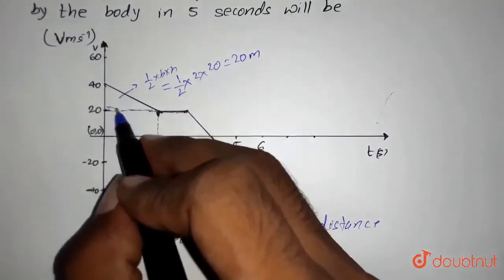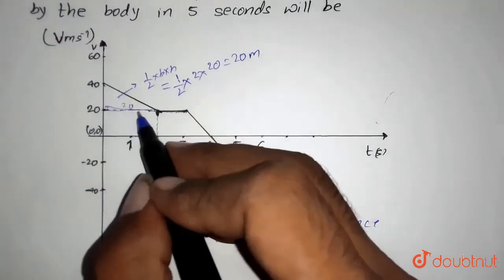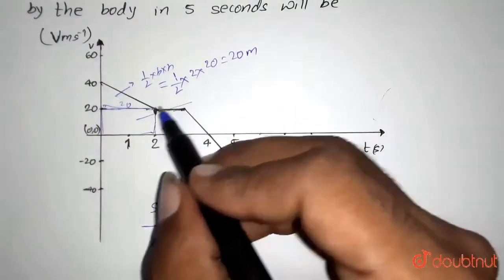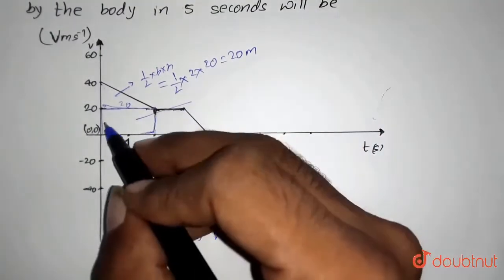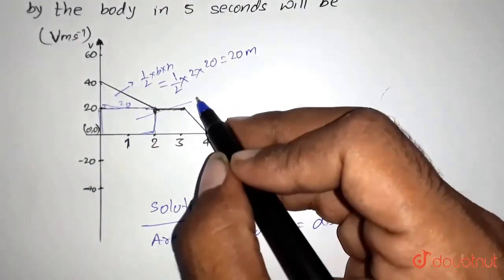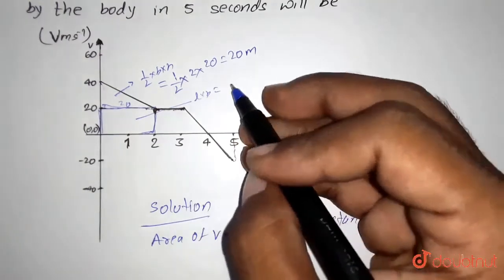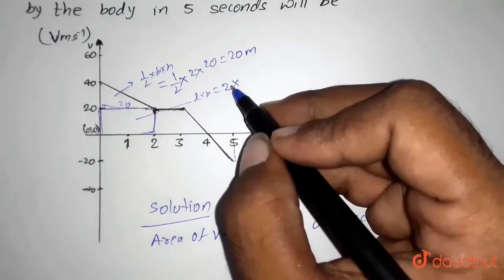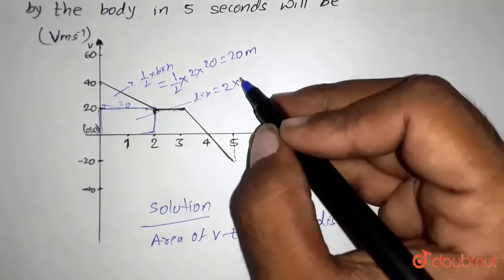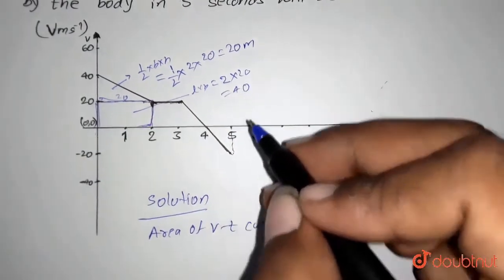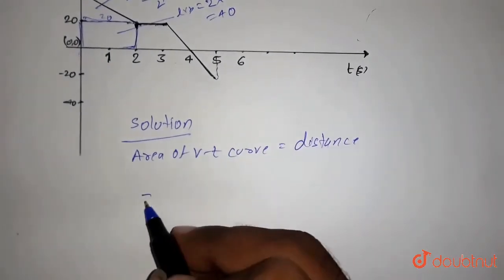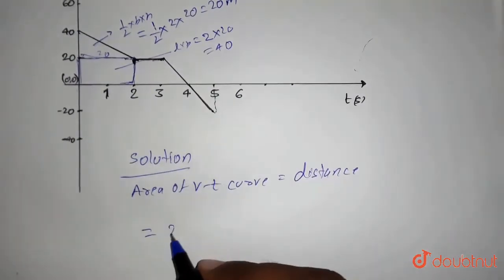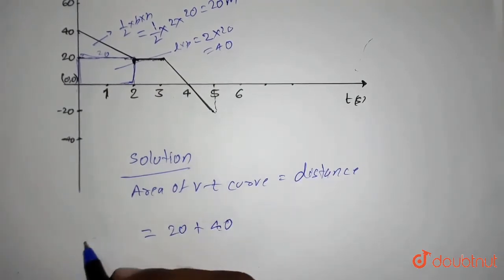So distance traveled in this time is 20 plus this is also coming under this. So area of this part, it is a rectangle. So it will be length into breadth. That is equal to 2 into 20. That is equals to 40. So area it is 20 and it is 40. So area of 20 plus 40. This is the total distance.